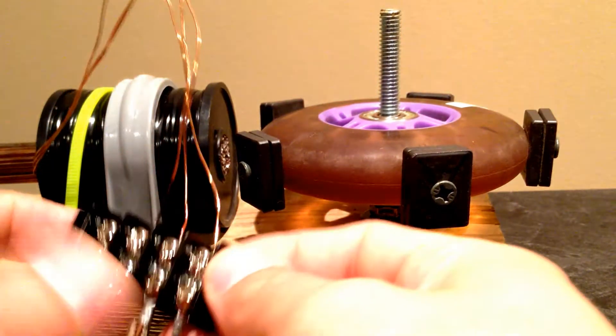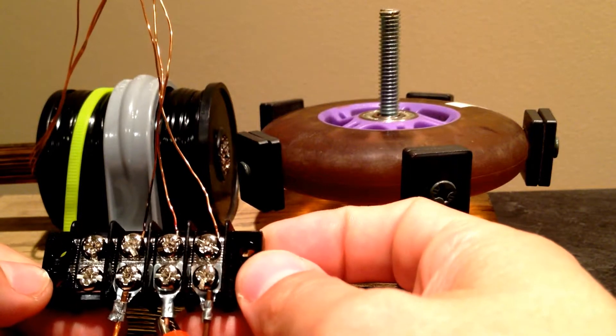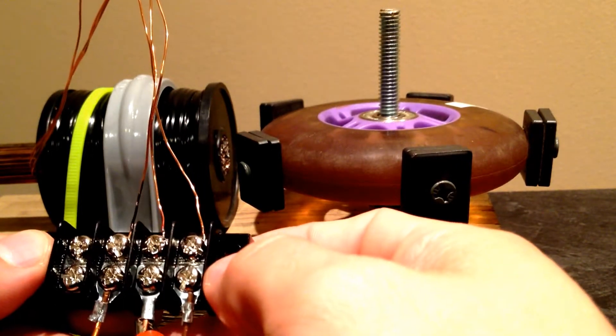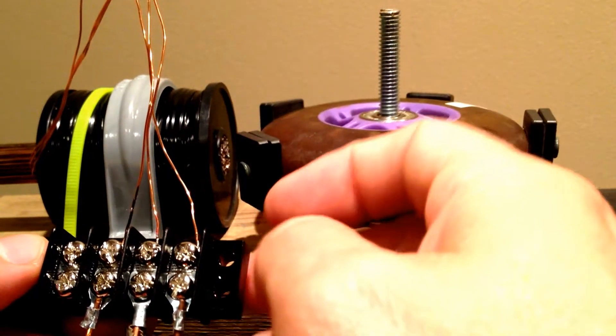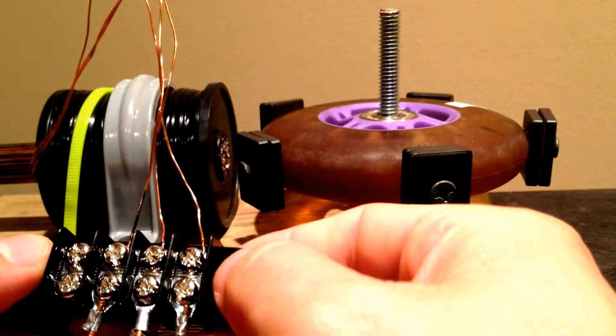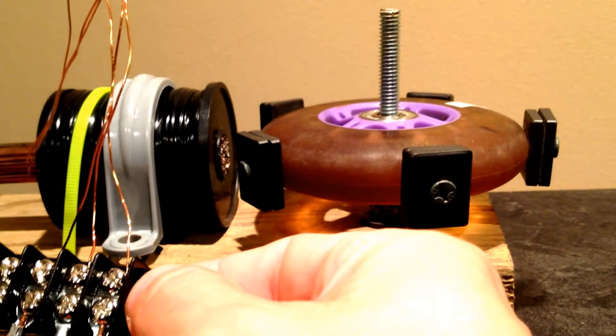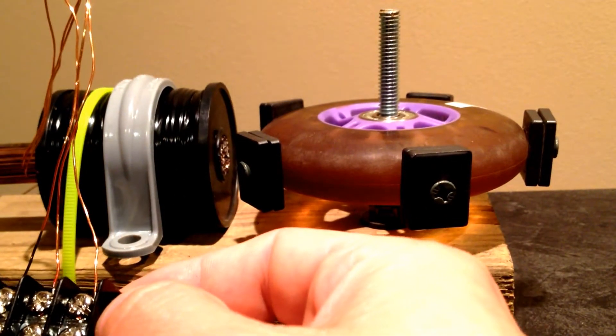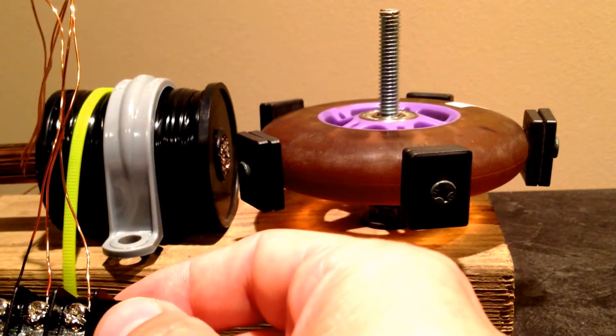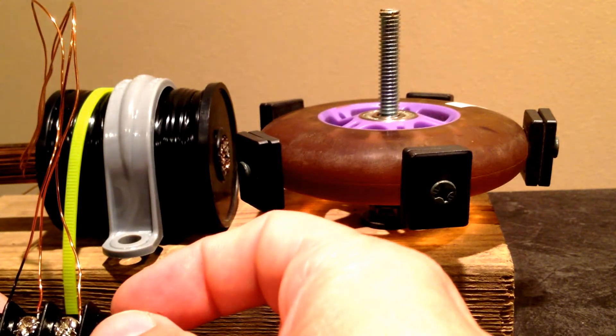I also used these terminal blocks. Not necessary but makes it a little bit easier so that I know that this is my trigger wire. This is my run wire. Same thing on the opposite side. One's a start. One's the end.